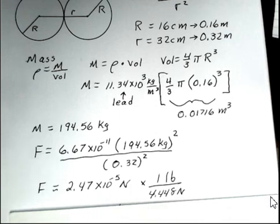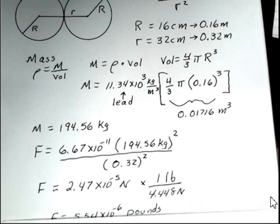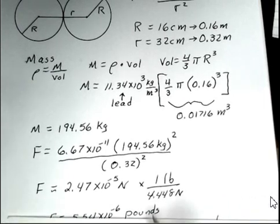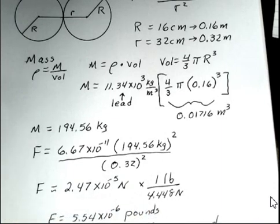I was just curious how many pounds that is, so I brought in the conversion factor. 1 pound is 4.448 newtons, and multiplying that conversion factor, dividing into the newton number, we find that the force is 5.54 times 10 to the minus 6 pounds.